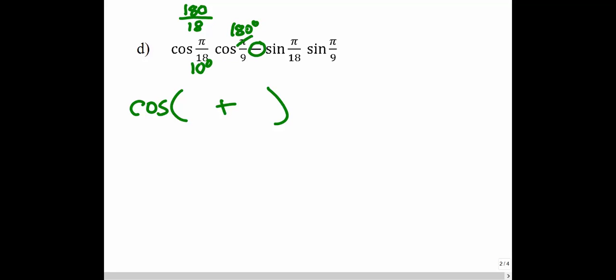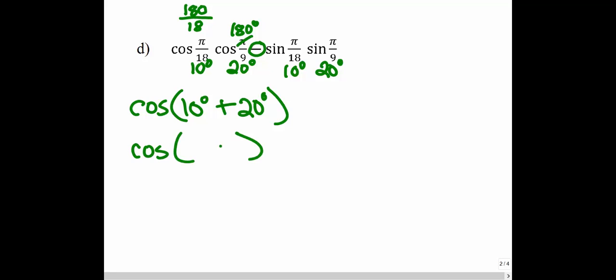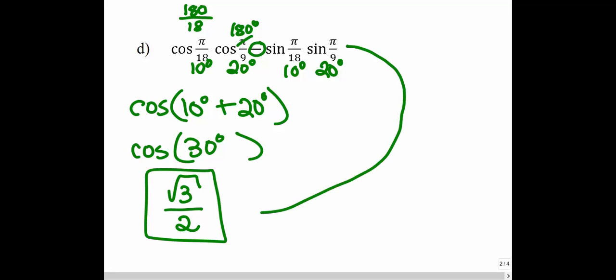So our first angle is 10 degrees and our second angle is 20 degrees. We convert and add the two angles inside the cosine function: cosine of 30 degrees. We know that cosine of 30 degrees is √3/2. So this complicated-looking expression can be converted to degrees and then converted using the identity for that sum of the two angles. We get cosine of 30 degrees, and √3/2 is the simplified version of this entire expression.